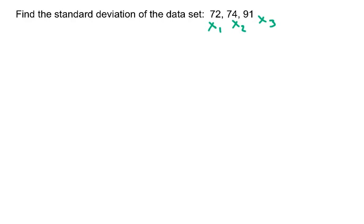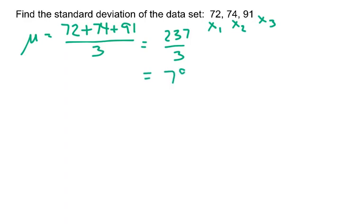One of the important things in that formula was that we needed mu, the mean of our data set. So that's the first thing we should find, and that'll be 72 plus 74 plus 91, all divided by three. That's going to be 237 divided by three, and so the mean of this data set is 79.